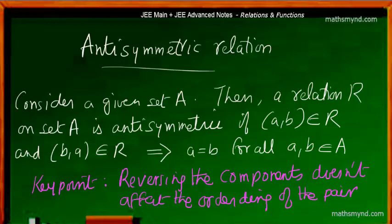Consider a given set A. A particular relation R on set A is anti-symmetric if the ordered pair (A, B) — that's the first component and the second component — is an element of the relation, and reversing the ordering of the pair, that is the ordered pair (B, A), is also an element of the same relation. It simply means that reversing the ordering of the components of the ordered pair doesn't affect the actual order. That's the key point.